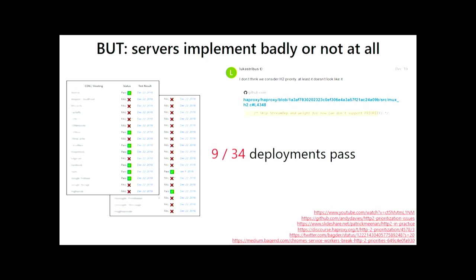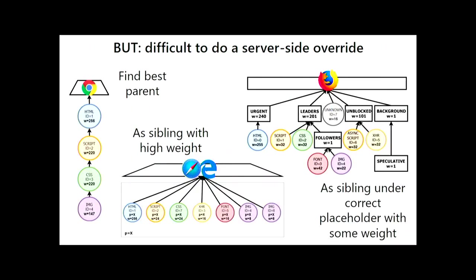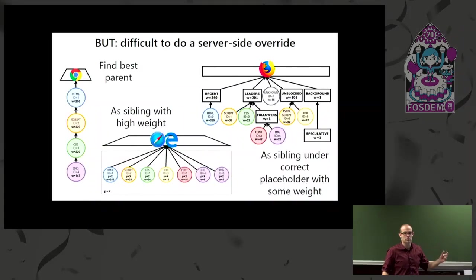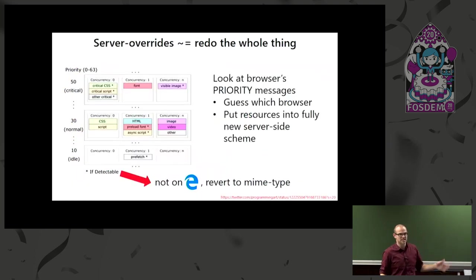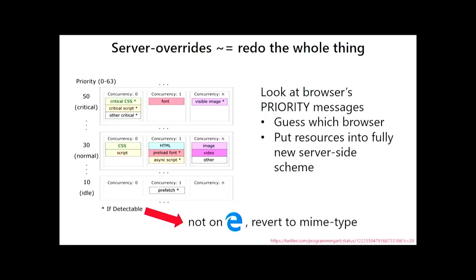The final nail in the coffin is that it's difficult to do server-side overrides. If I have one image I want to make higher or lower priority, how exactly am I going to do this? It depends on the browser which tree manipulation I'll have to end up doing. This is actually what Cloudflare does — they try to guess which browser is connecting based on the priority tree they see, then extract the resources into their own scheme. For non-Edge browsers that aren't sending any priority information, they have to use MIME type to try and determine what is happening. I'm not saying it's not possible — I'm saying you need a Cloudflare-level engineering team to manage this complexity. This is not something a normal developer can do.